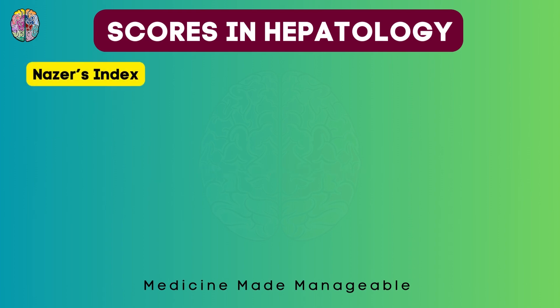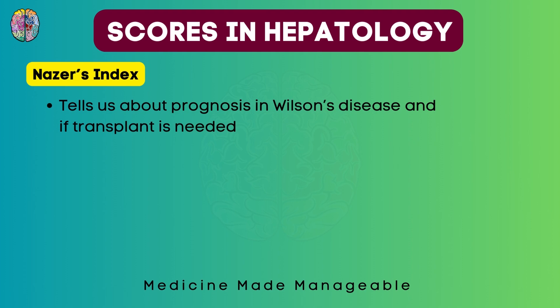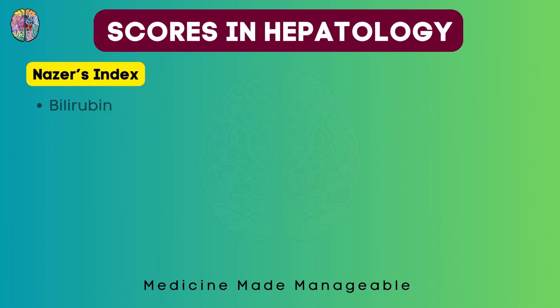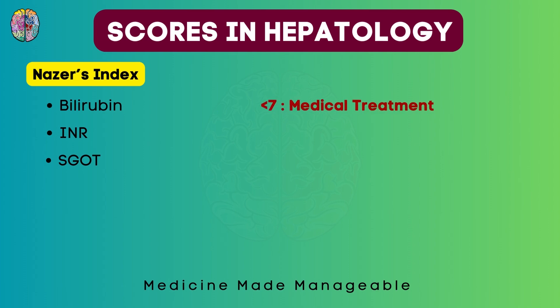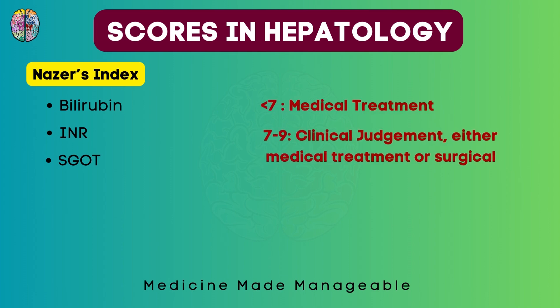Finally, Nazer's Index tells us about the prognosis in Wilson's disease and whether transplantation is needed. Bilirubin and INR are again measured, and additionally SGOT is also measured. If the score is less than 7, medical treatment is given. If between 7 and 9, clinical judgment is used to decide between medical or surgical treatment. If more than 9, transplantation is definitely required.